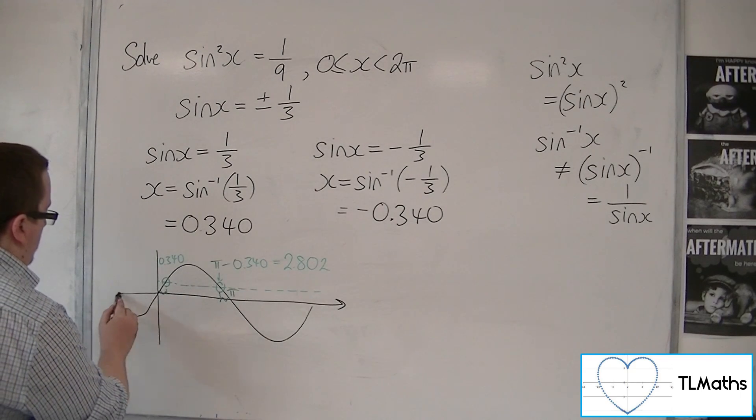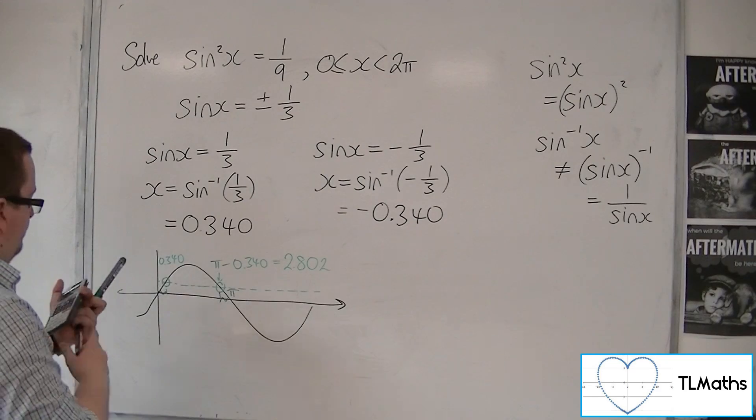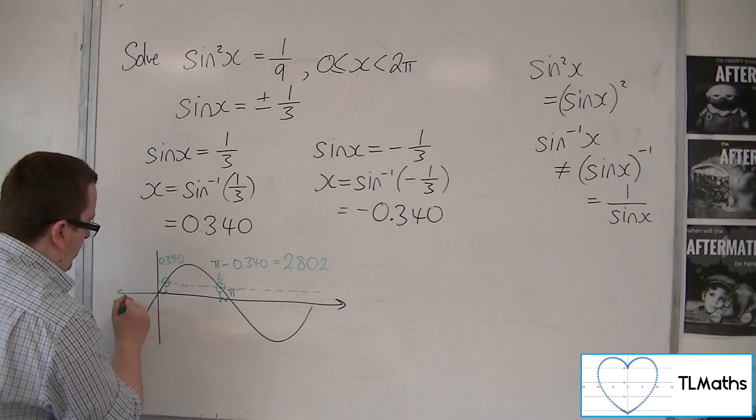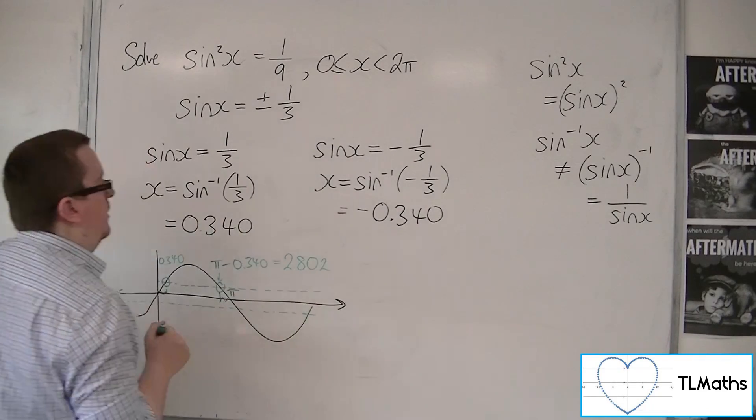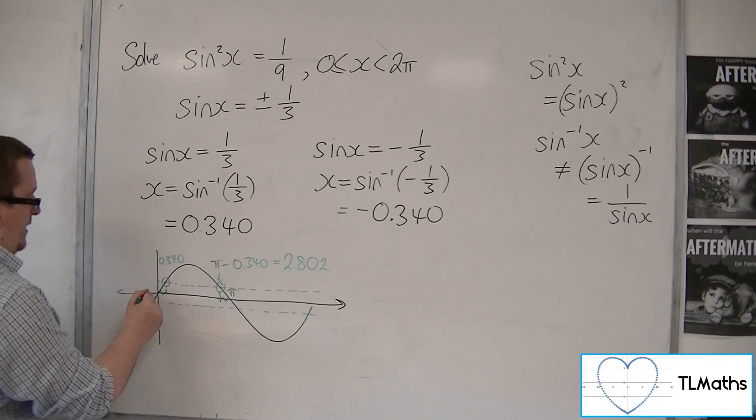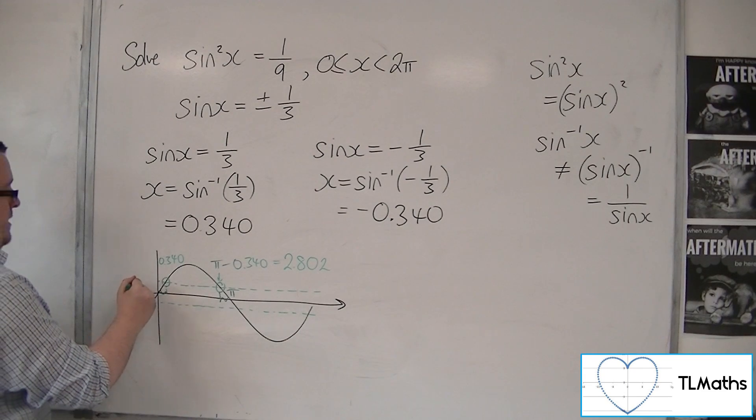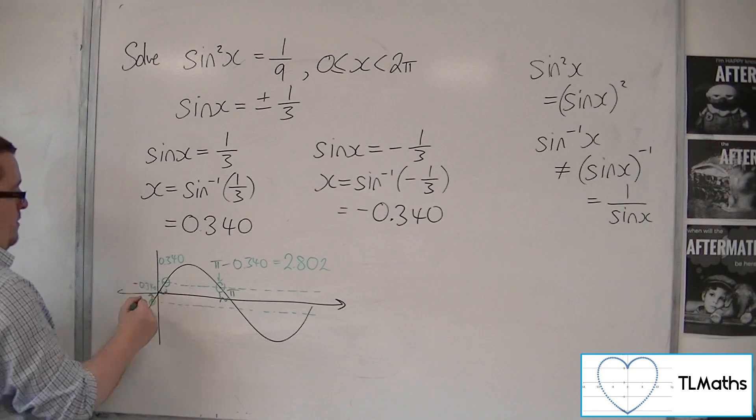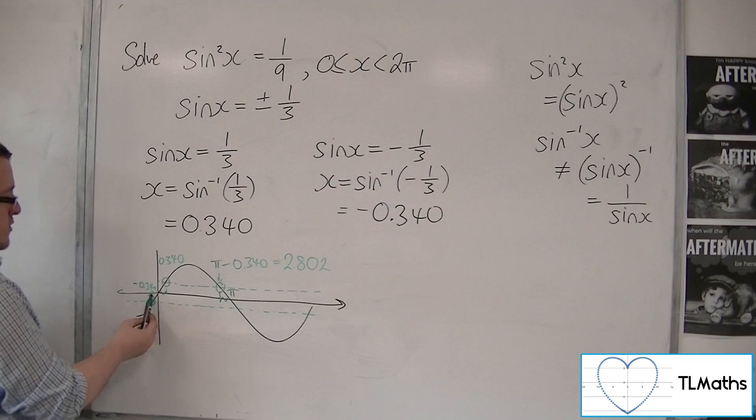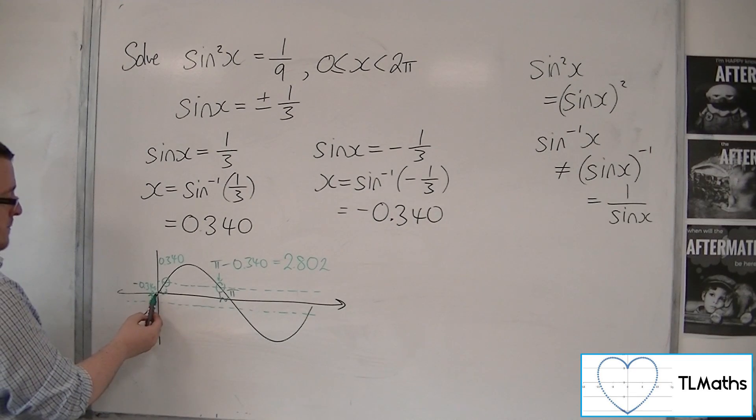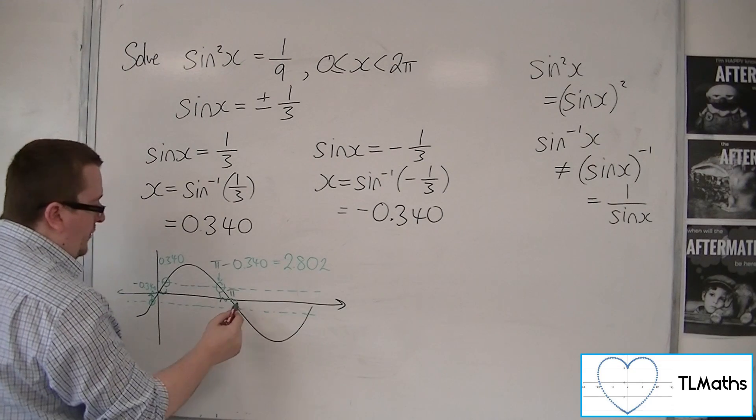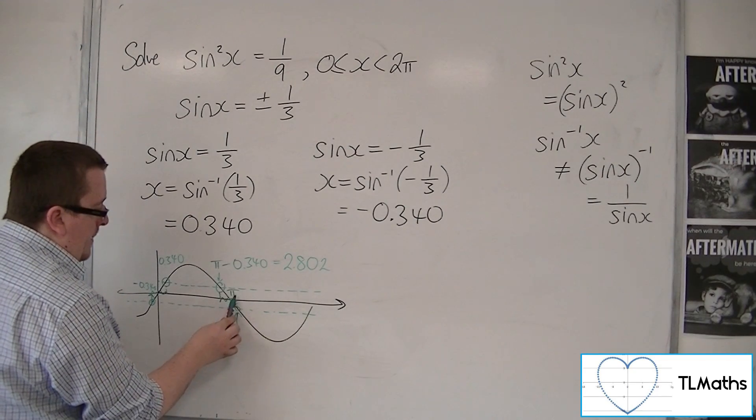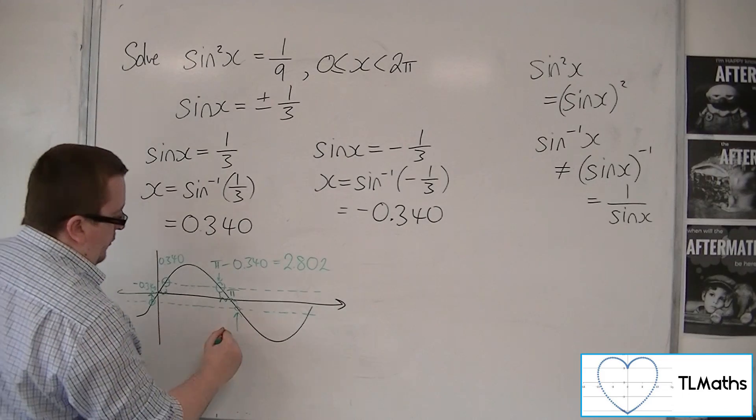So let's continue the x-axis. Here is the horizontal line of minus 1/3. This is the solution that my calculator has given me, the minus 0.340. That distance is 0.340. And so will this distance be. So I can get that solution by doing π plus 0.340.